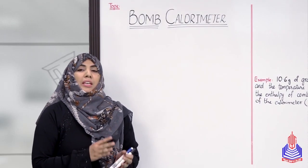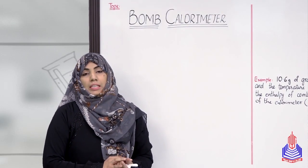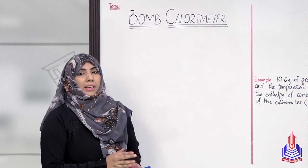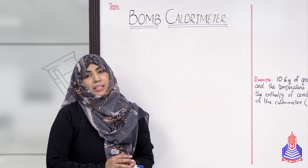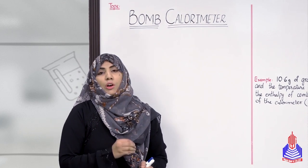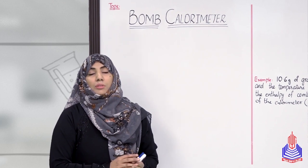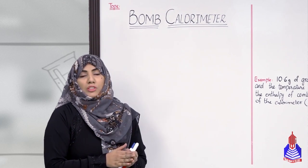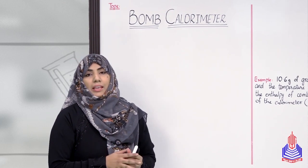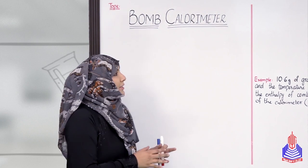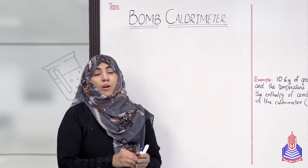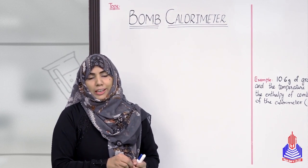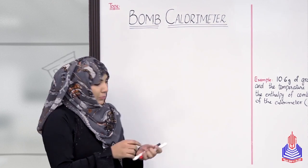Cheers students! Last lecture में हमने calorimeter की first type को discuss किया था, that was glass calorimeter. And today we are going to discuss the second type, that is bomb calorimeter. याद रहे students, calorimetry is the measure of change in enthalpy of a system, और जिन instruments से हम इस change को measure करते हैं उन्हें calorimeter कहते हैं। तो second type है bomb calorimeter - आइए देखते हैं कि bomb calorimeter हम किस type of enthalpy के लिए use करते हैं और इसकी accuracy क्या है।